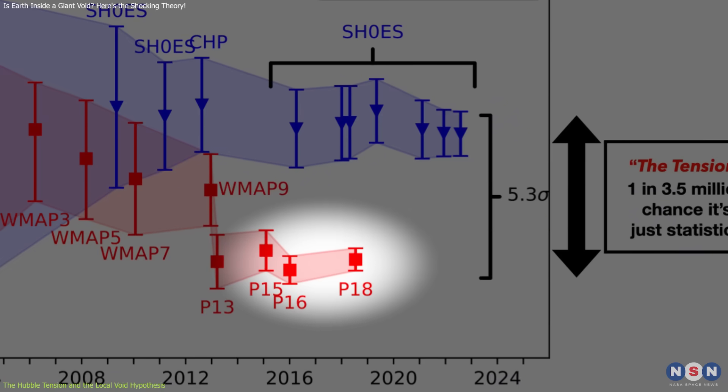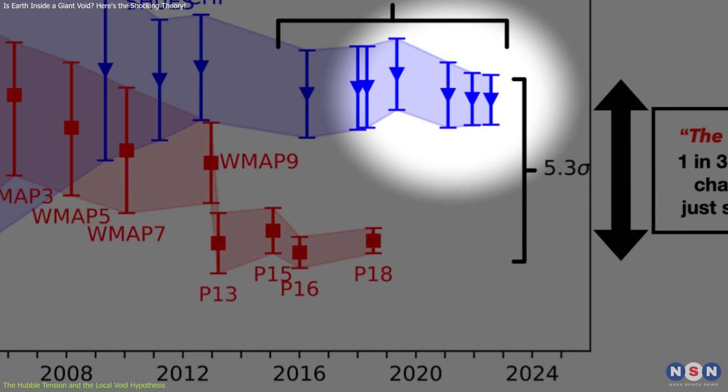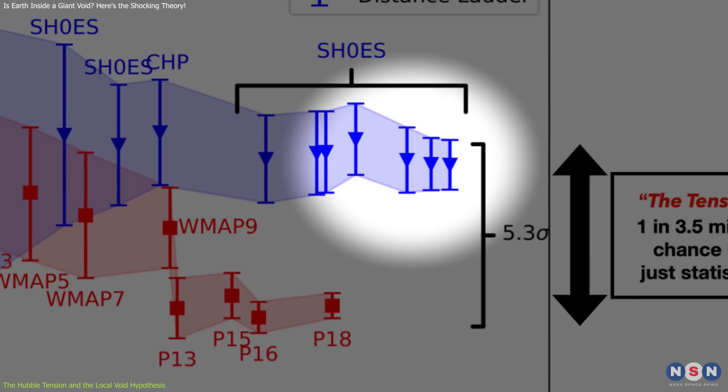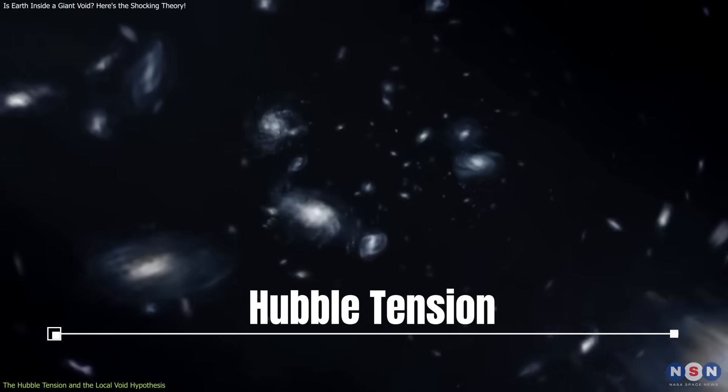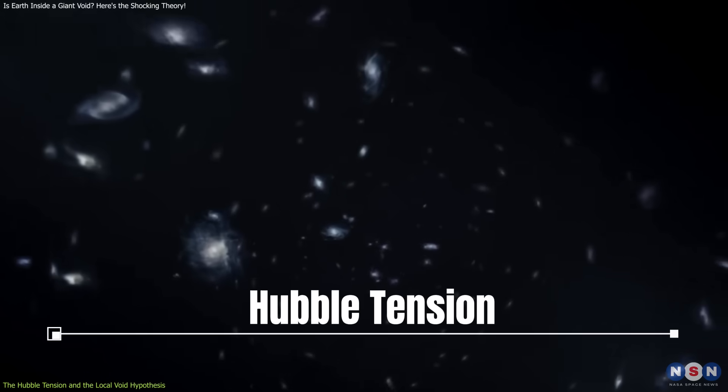The CMB suggests a slower rate of expansion, while nearby galaxies show a faster expansion rate. This discrepancy, known as the Hubble tension, has been a source of ongoing debate in cosmology.